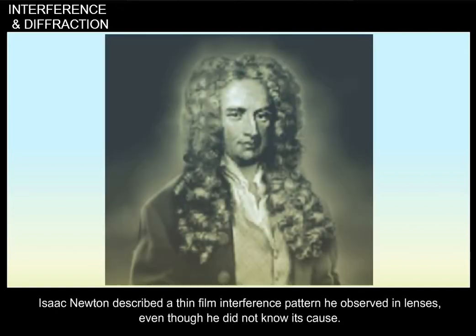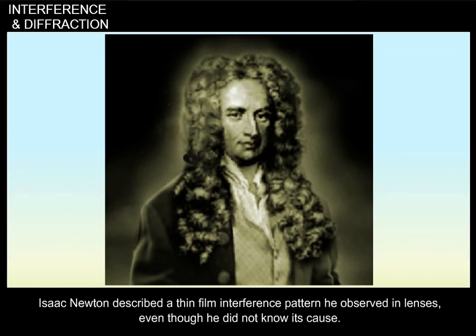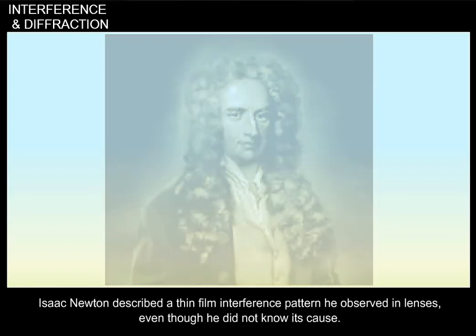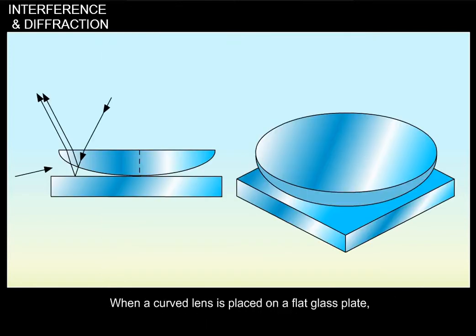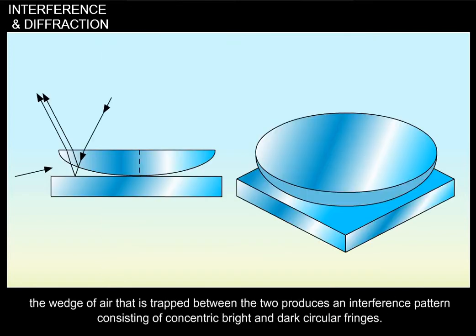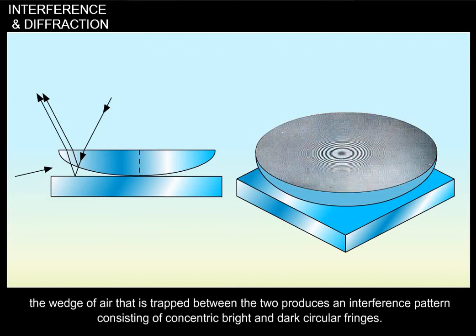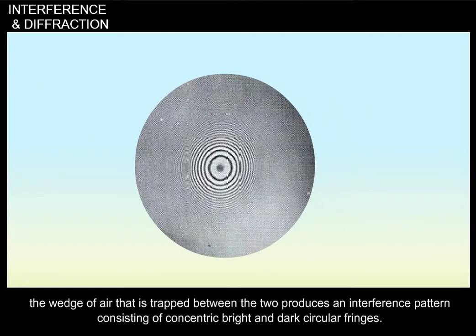Isaac Newton described a thin film interference pattern he observed in lenses, even though he did not know its cause. When a curved lens is placed on a flat glass plate, the wedge of air that is trapped between the two produces an interference pattern consisting of concentric bright and dark circular fringes.